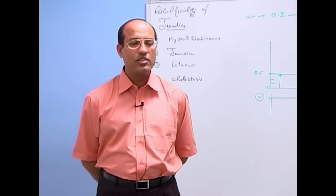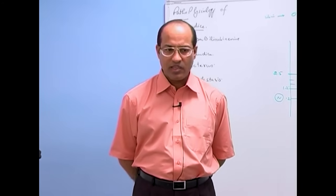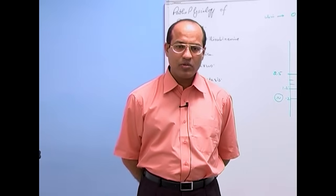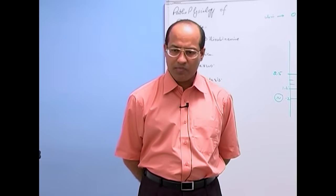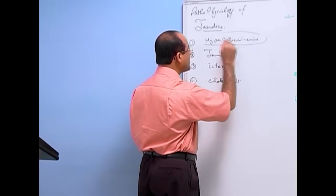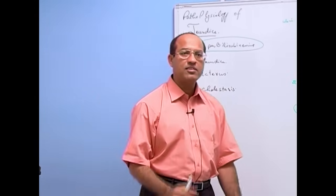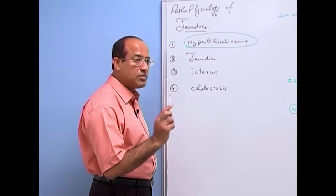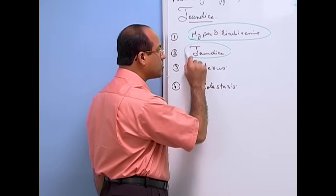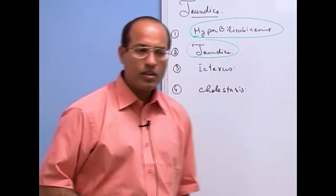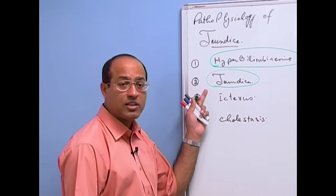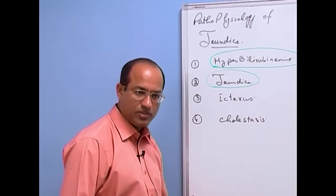So what is jaundice? Jaundice is yellow discoloration of the skin, mucous membrane, interstitial fluids, and sclera due to hyperbilirubinemia. It means every hyperbilirubinemia is not jaundice. Very mild hyperbilirubinemia is not jaundice. Hyperbilirubinemia should be at a level where observing people are able to appreciate the yellow coloration of the skin, mucous membrane, sclera, or interstitial fluid — then we say jaundice is there.